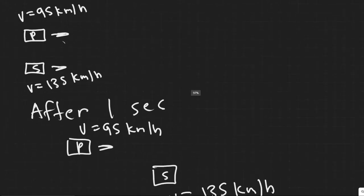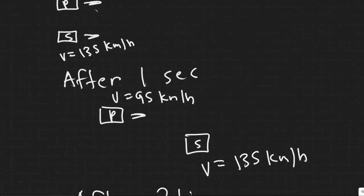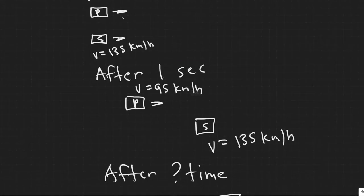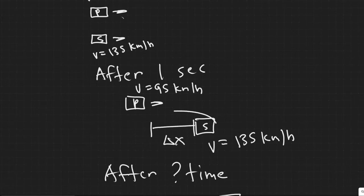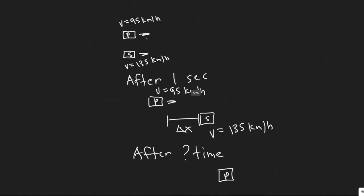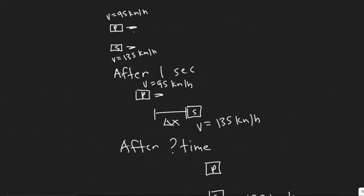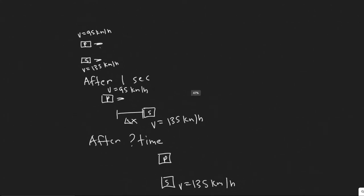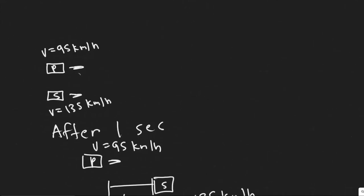What we're trying to find is how much time after that one second it takes for the police car to catch up to the speeder. The first thing we need to do is find the distance between the speeder and the police car after that one second. But before we do that, we need to convert both speeds into meters per second, since we'll be dealing mainly with meters per second when solving this.